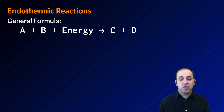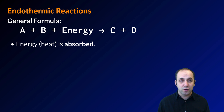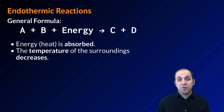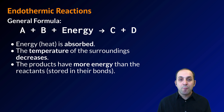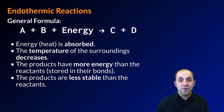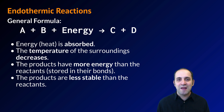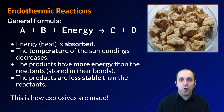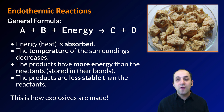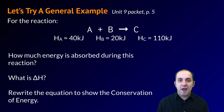Let's consider endothermic reactions first. The general formula is something like: A + B + energy → C + D. Notice that energy is on the reactant side of the arrow, meaning it's absorbed from the environment, so the environment's temperature decreases. The products have more energy than the reactants — that energy is stored in their bonds — making the products less stable than the reactants. A good example of an endothermic reaction is how we make explosives, like TNT. We have to store energy in the bonds of those TNT molecules to produce them.